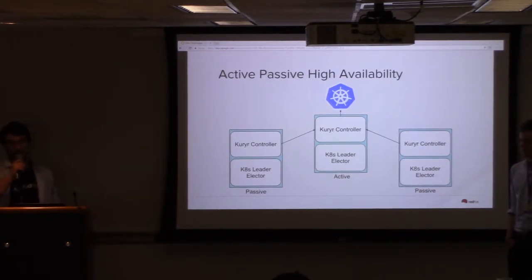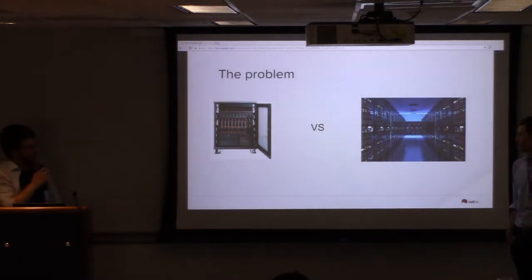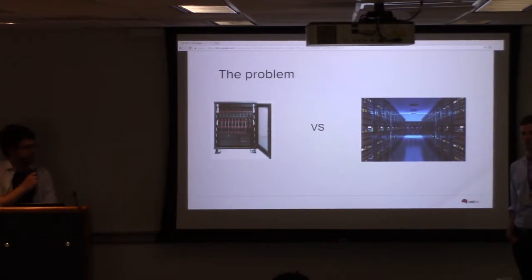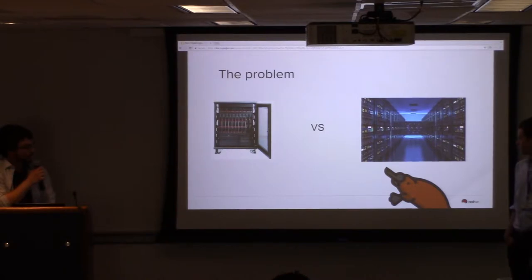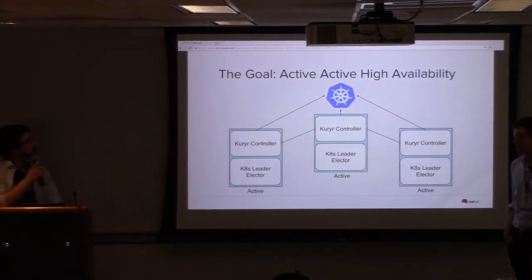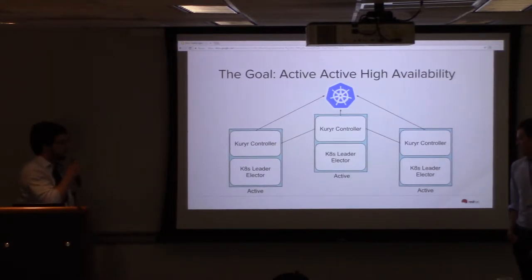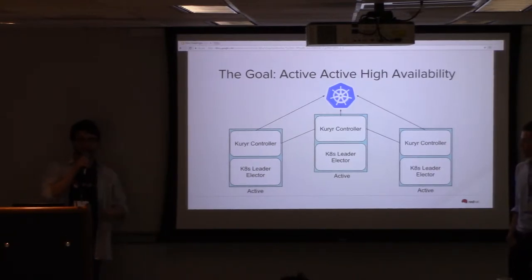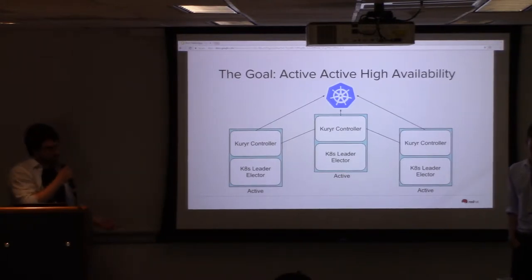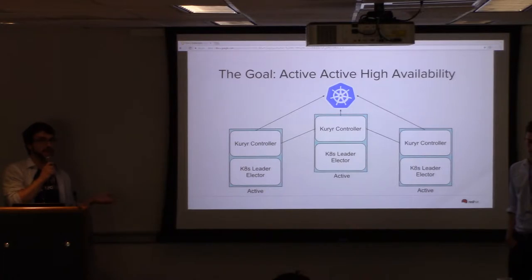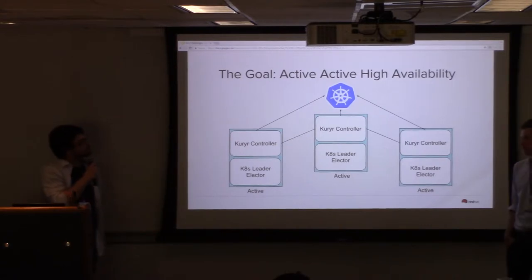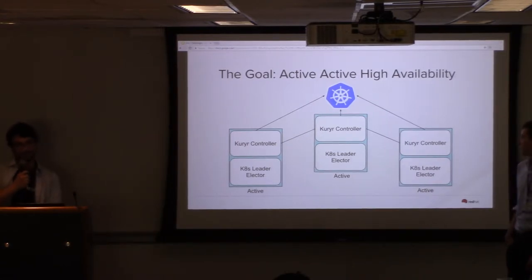Active-passive is good — it's high availability. But the issue is that it doesn't scale out. When you start having bigger data sets and bigger data centers, it's going to get stressed under load. So we are working to develop an active-active high availability solution, which means all components are able to handle jobs and pick up the slack of any servers that might have died. The benefit is that it's not only highly available, but it also scales horizontally, which means performance scales too.